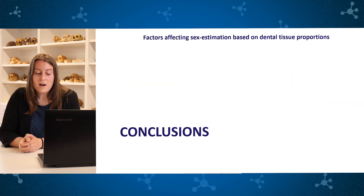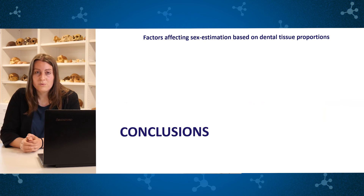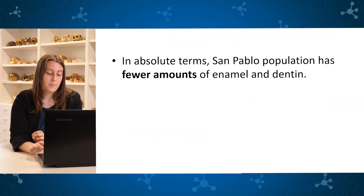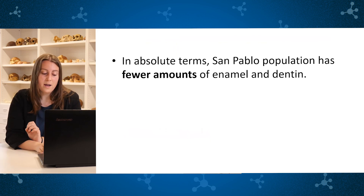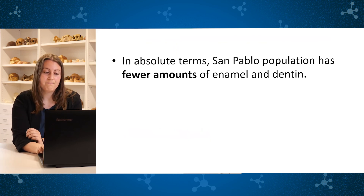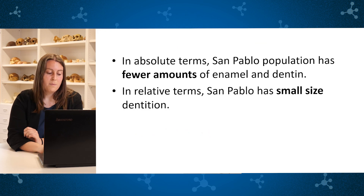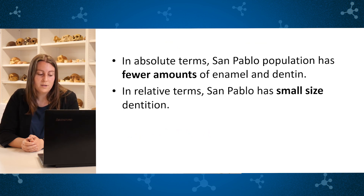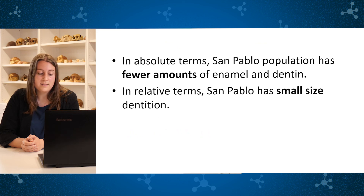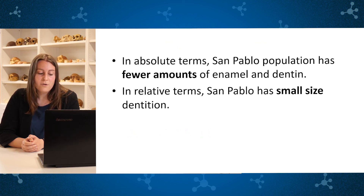We are aware our sample size is small and these results should be viewed with caution. In the population of San Pablo, we observe fewer amounts of enamel and dentine in absolute terms. But if we compare in relative terms, our population would fit into Garcia Campos' sample. We could say that the population of San Pablo has a small-sized dentition and that we should establish a specific methodology for each population.